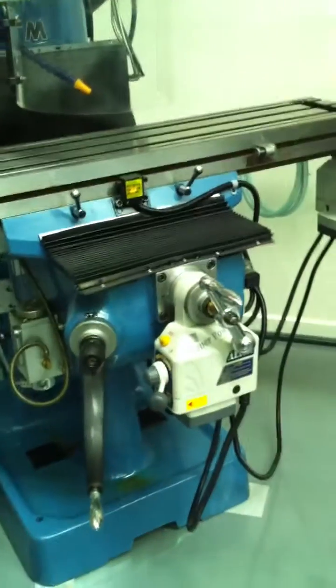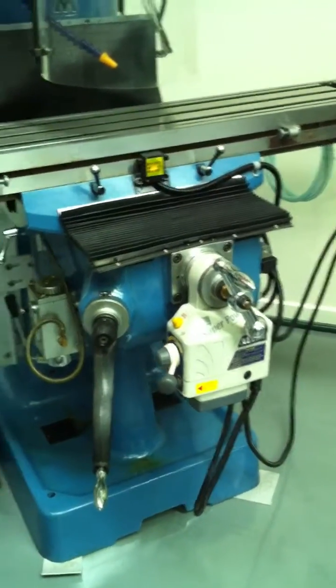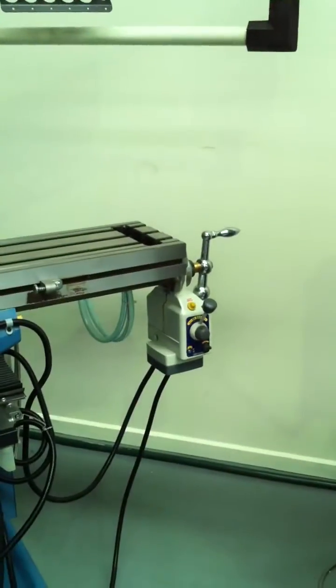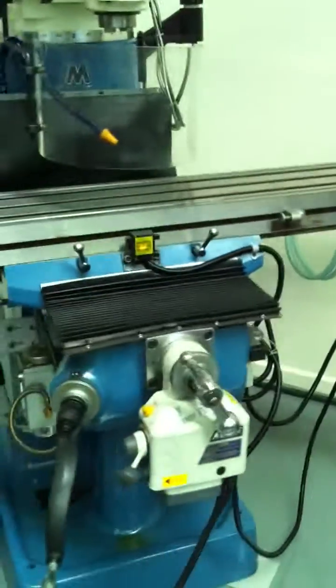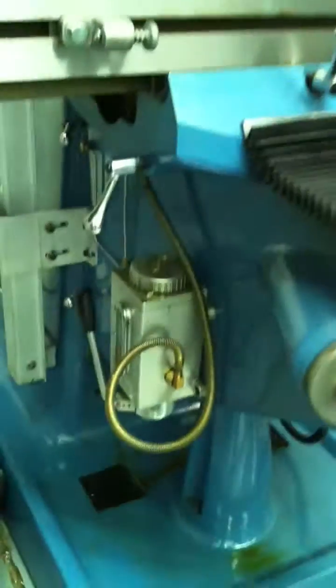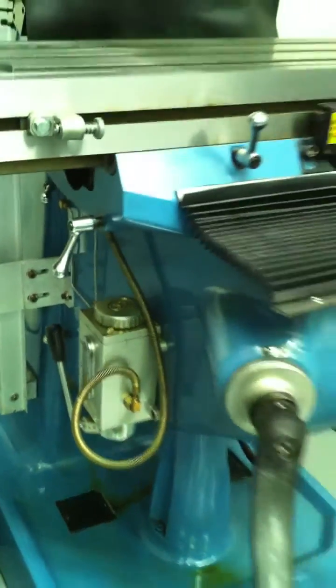We have power feeds located in the two axes as you can see there on the table, and also we've got the heavy-duty industrial lube system located here as well.